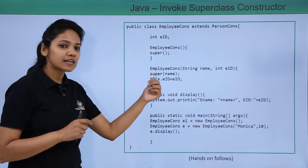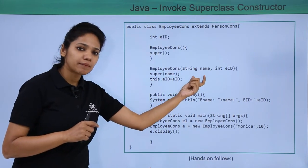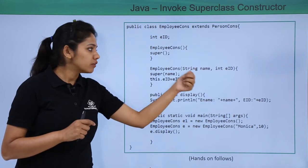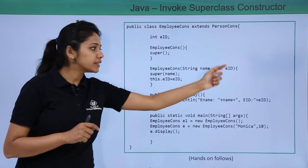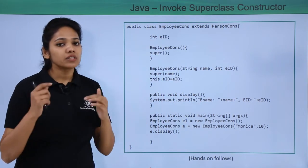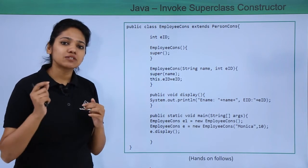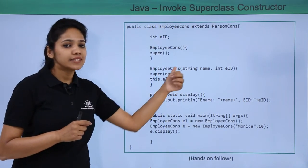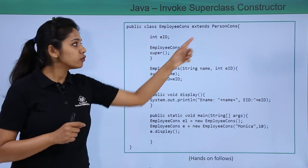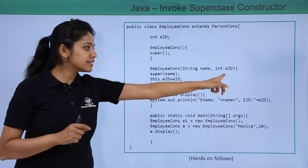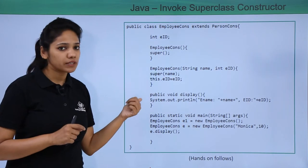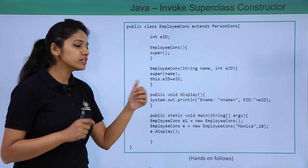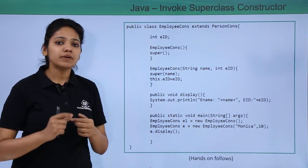In the second constructor of this class, we provide two parameters — the first is of String type (employee name) and the second is of integer type (employee ID). In this parameterized constructor, the name refers to the parent class, and the employee ID is defined in the child class.